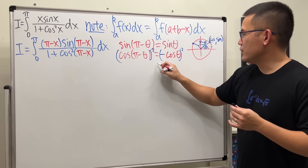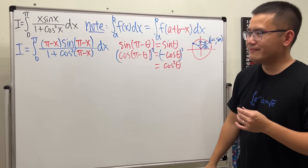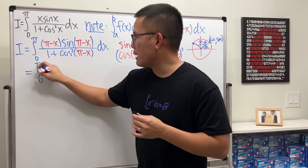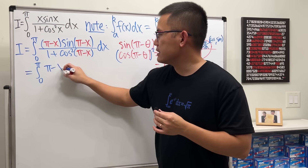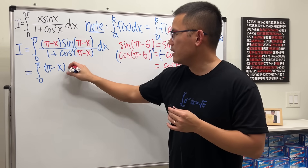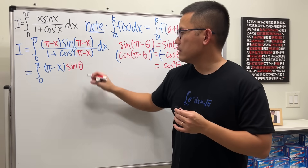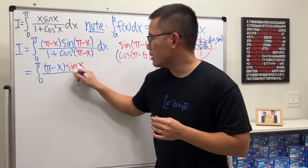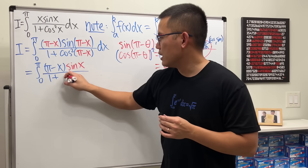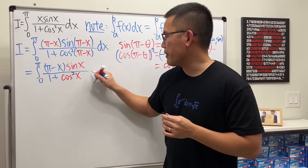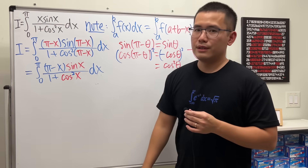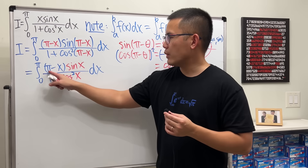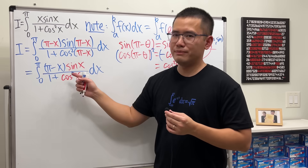So our blue integral simplifies to the integral from 0 to π of (π − x) · sin(x) / (1 + cos²x) dx. This integral and the original one are very similar — the only difference is that we have π − x instead of x.